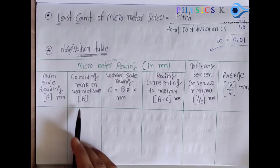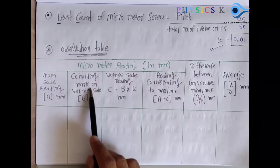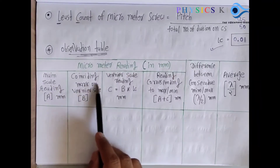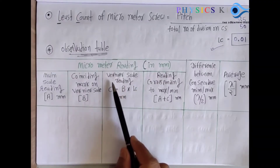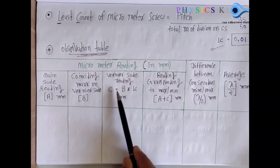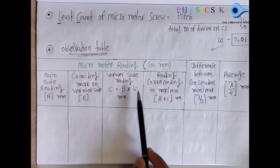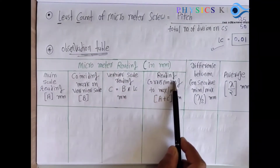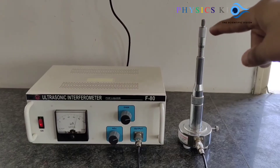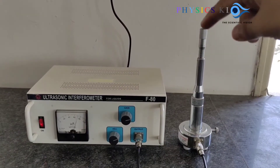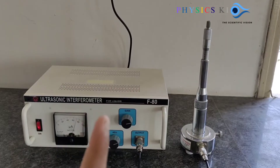In the observation table we have: main scale reading (A), coinciding number (B), vernier scale reading B multiplied by LC, and the final reading which is A plus C. We are already familiar with the micrometer screw gauge. The main thing is to just rotate the micrometer screw gauge and record the deflection.